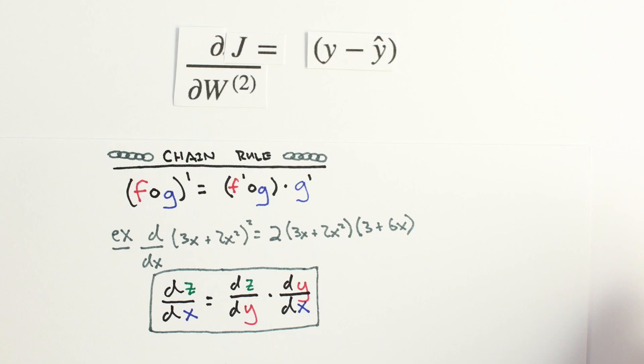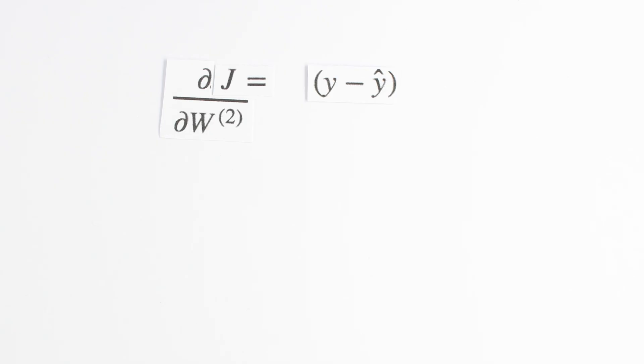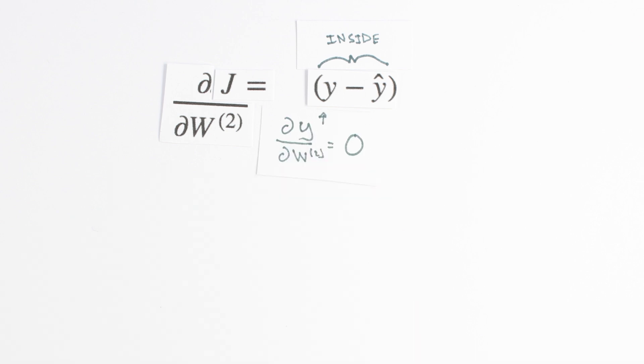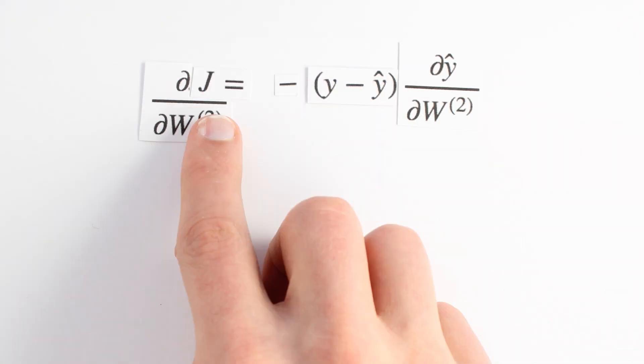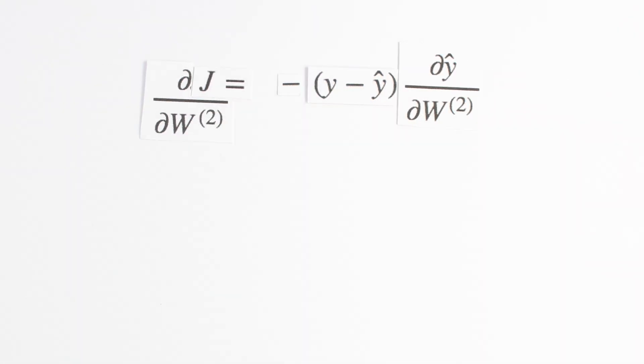We've taken the derivative of the outside of our cost function. Now we need to multiply it by the derivative of the inside. y is just our test scores, which won't change, so the derivative of y, a constant, with respect to w, is 0. y hat on the other hand does change with respect to w2, so we'll apply the chain rule and multiply our results by minus dy hat dw2. We now need to think about the derivative of y hat with respect to w2.